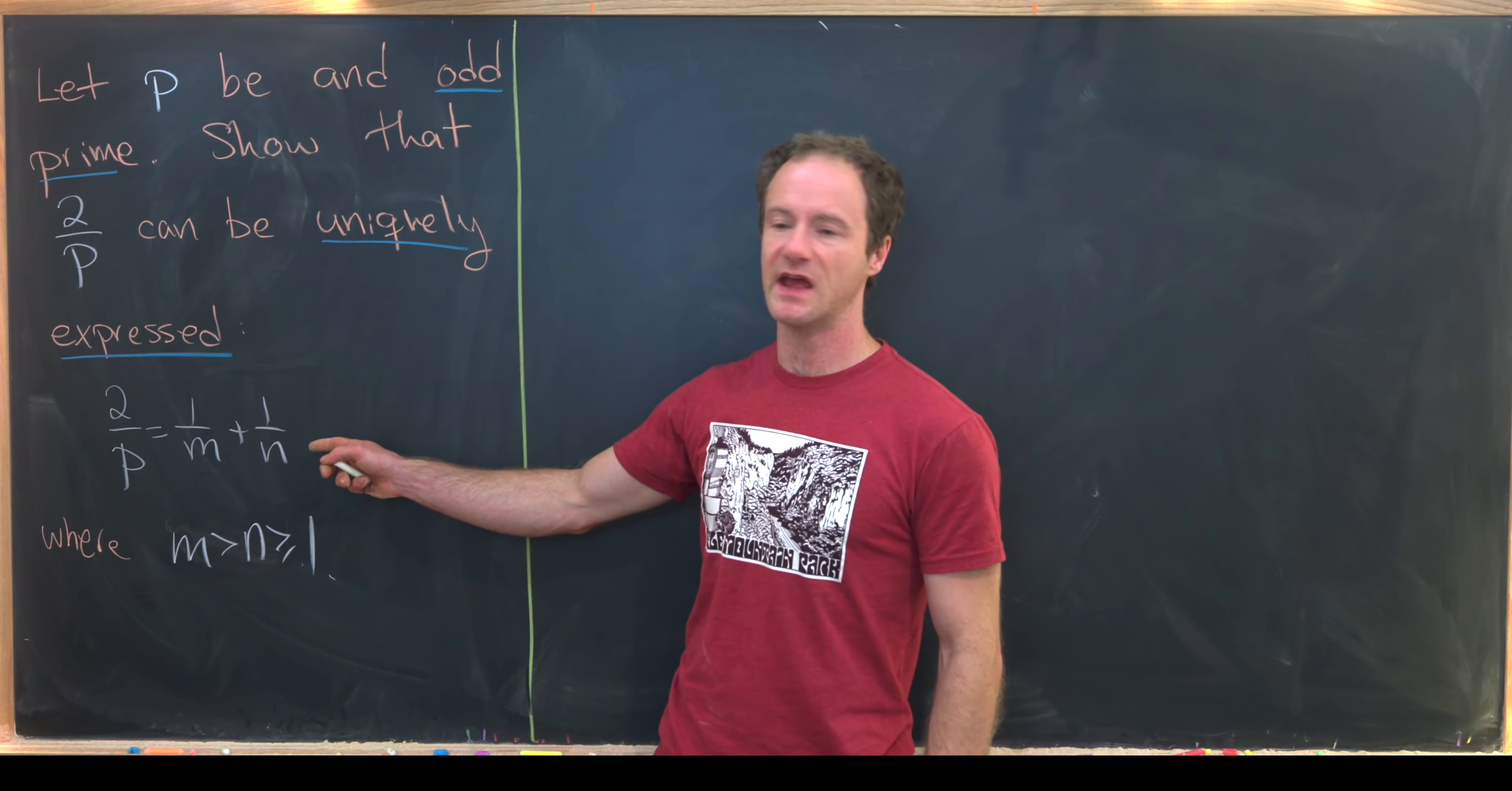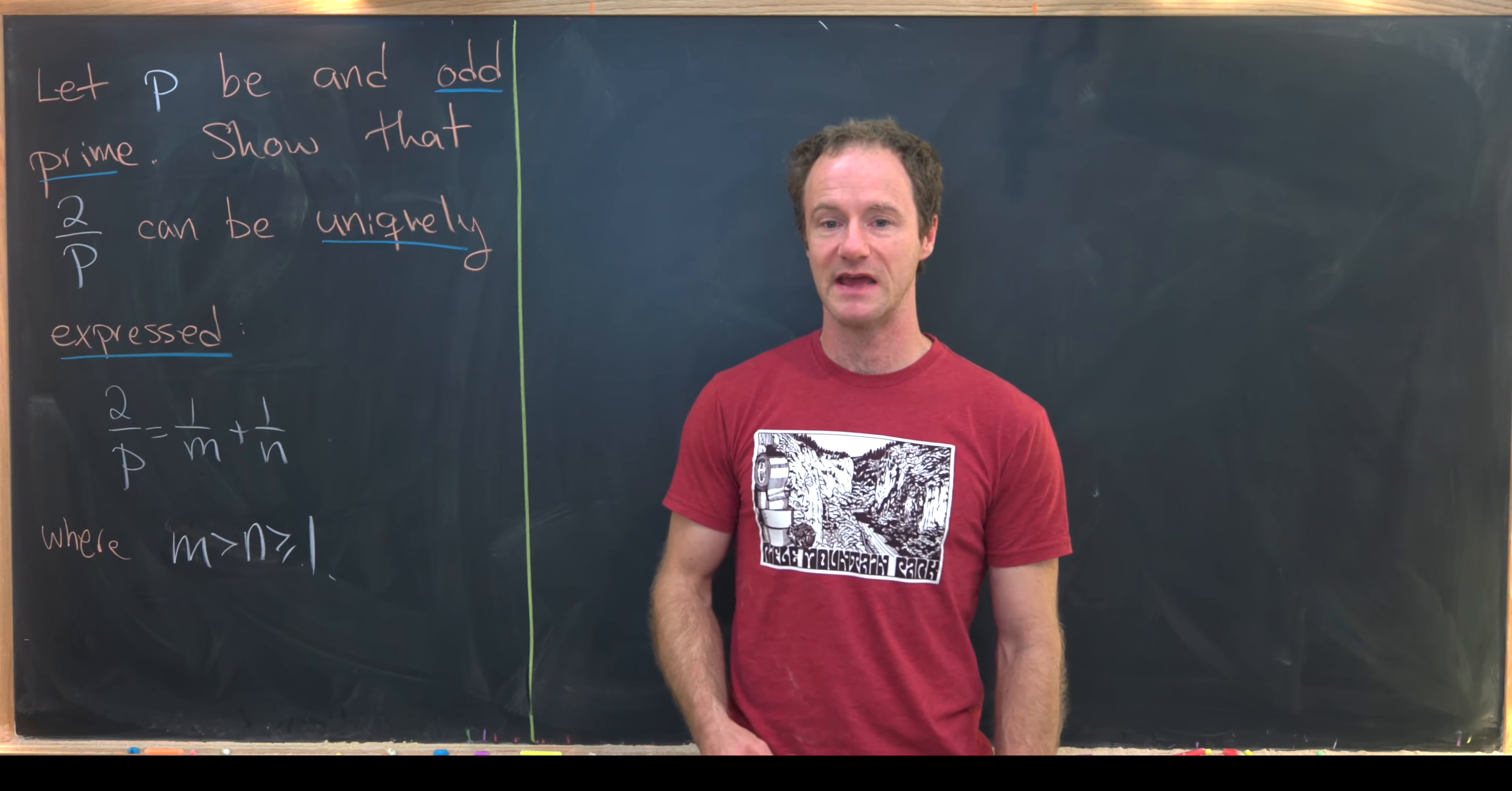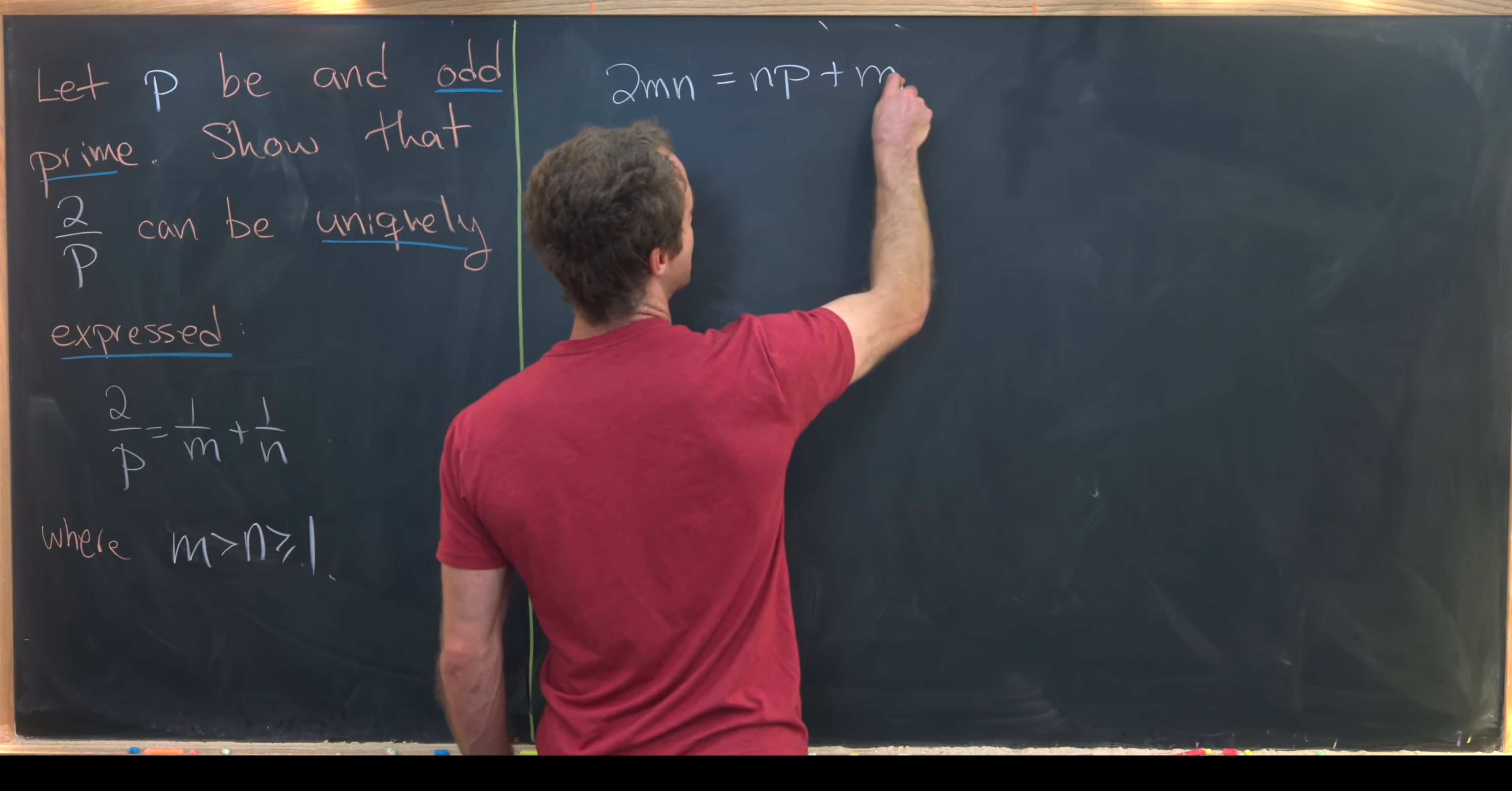Let's take this equation and switch it from an equation that's happening in the rational numbers to an equation that's happening in the natural numbers. We can do that by clearing the denominators by multiplying by MNP. So notice multiplying by MNP will give us 2MN equals NP plus MP.